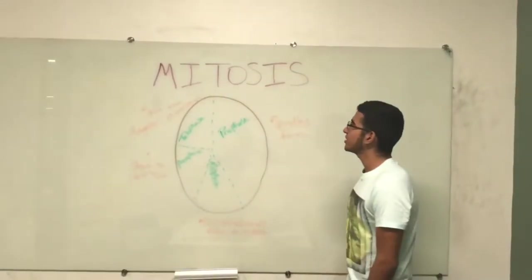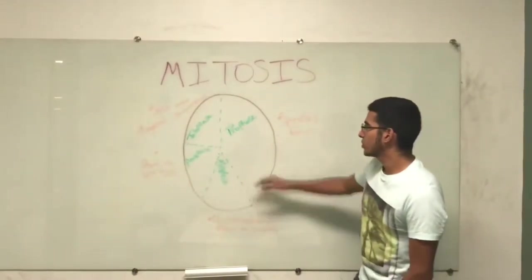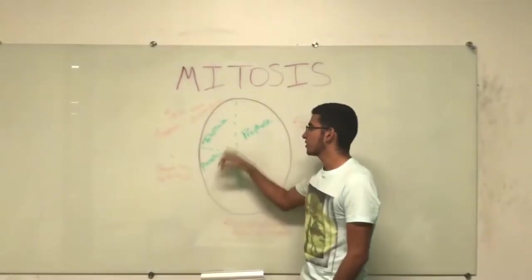My name's Angel, and I'm representing mitosis. Mitosis is composed of four parts: prophase, metaphase, anaphase, and telophase.